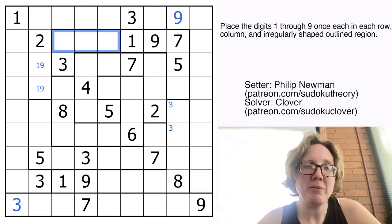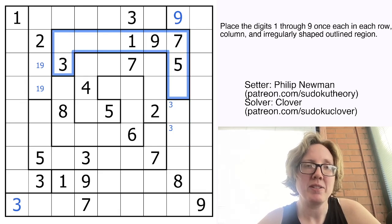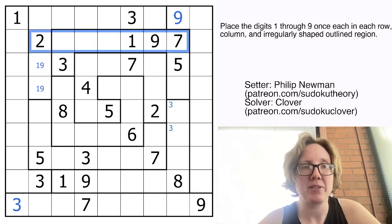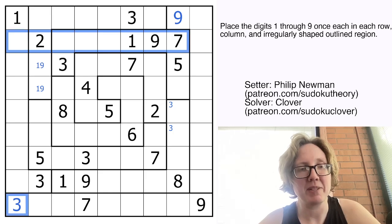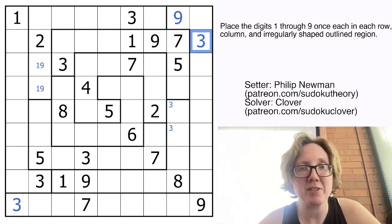So I have a three here. And I can't put a second three into this region. So I can't put a three in any of those cells. I also can't put a three here. And I can't put one here because there's one in column one. So there's my three.